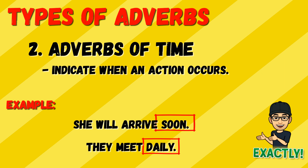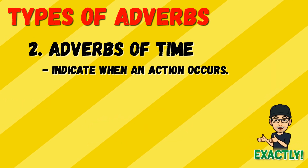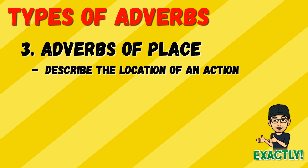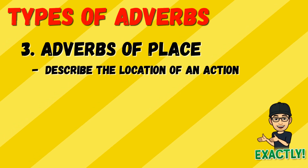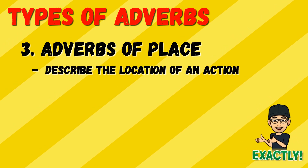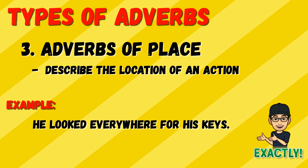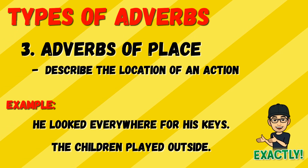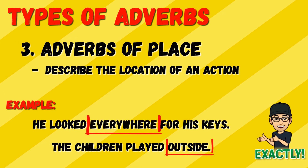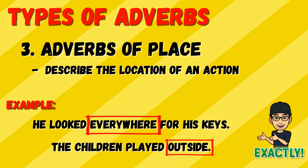The third type is adverbs of place. These adverbs describe the location of an action. For example: 'He looked everywhere for his keys' and 'The children played outside.' Everywhere and outside are adverbs of place because they tell us the location of the action.